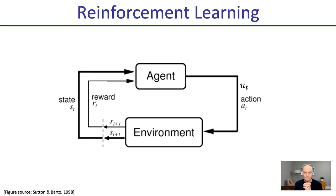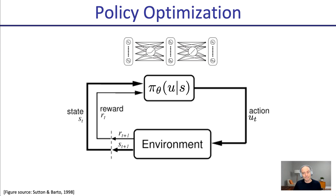Quick recap of our setting. We have an agent interacting with an environment by taking actions, observing the environment, and based on that, taking those actions. The goal for the agent is to optimize expected reward accumulated over time. In policy optimization specifically, the agent is represented by a policy — often, under the hood, a neural network. We're trying to change the parameters of the neural network, the parameter vector theta, to find the choice of parameters that results in collecting high reward in the environment.